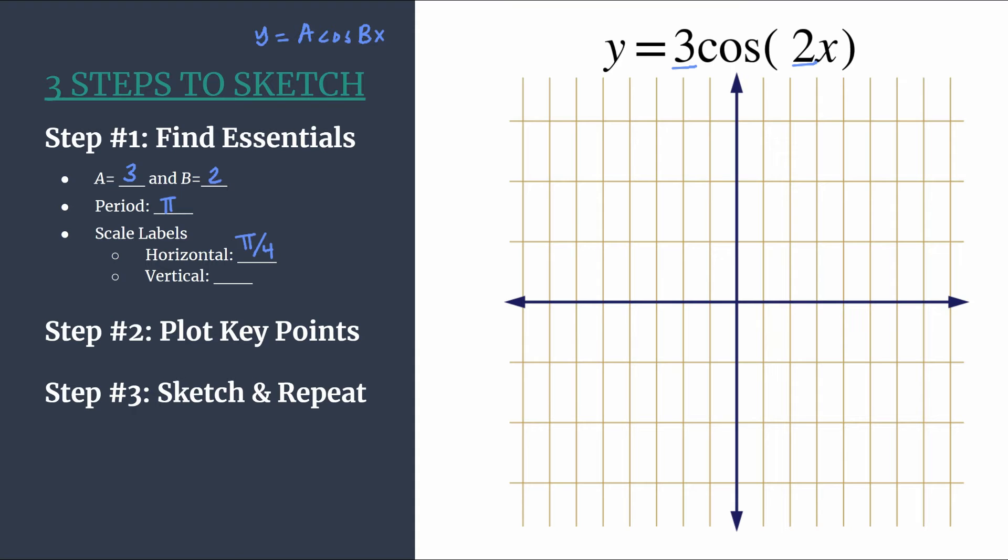Okay, so we will count our horizontal axis by our period divided by 4, or pi divided by 4. Now for the vertical scale, I say you can use a if you want, you can use one, really doesn't matter here, so let's use three and that should be a great setup.